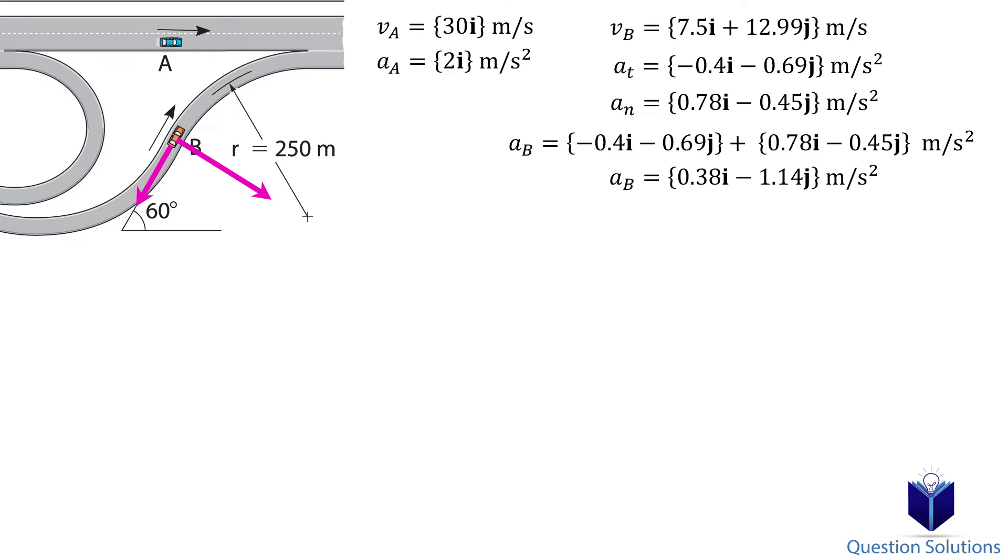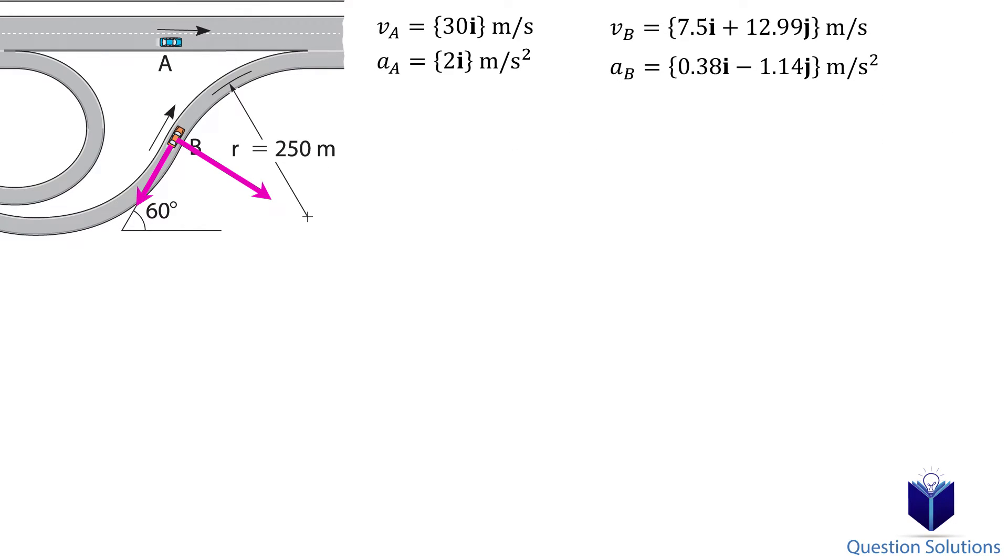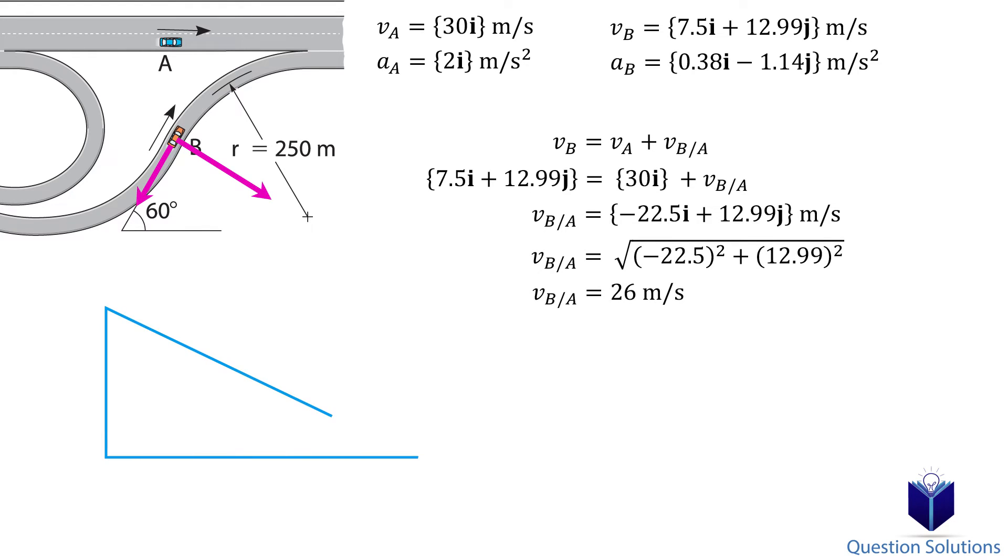Now that we have the velocity and acceleration, we can use our relative equations. For velocity, we have this. Plug in what we know and solve. Now we can find the magnitude of velocity. The angle can be found using tan inverse.